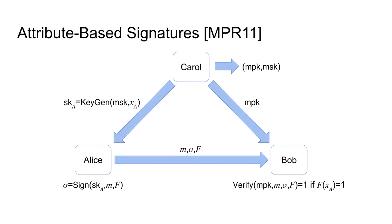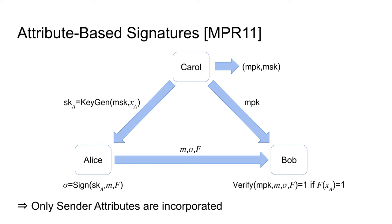An extension of digital signatures that incorporates attributes is the notion of attribute-based signatures. In an attribute-based signature scheme, Carol executes the setup procedure to generate a master public key and a master secret key. The master secret key is then used by Carol together with an attribute set XA to generate the signing key SKA of Alice. Alice then uses her signing key SKA to generate a signature Sigma for a message M and a policy F. This signature can then be verified using the master public key and the policy F, and is only valid if the attributes XA of Alice fulfill the policy F. Unfortunately, attribute-based signatures only incorporate attributes of the sender, which is still insufficient for our setting.